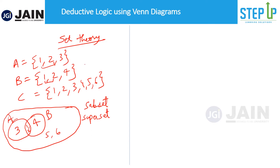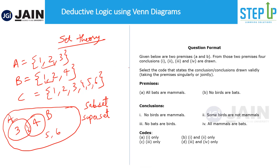Basically, Venn diagrams is the diagrammatic way to represent sets, and that's what we do here. The question format would be the same — like how we had elements in sets, here we have terms like bats, mammals, and birds. In the premises you have two statements, each with two terms, and a particular relationship is described — for example, 'all bats are mammals' is universal affirmative, and 'no birds are bats' is universal negative. We merge these two statements and deduce conclusions — that is our syllogism.